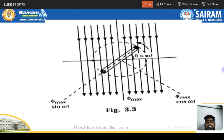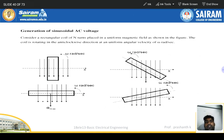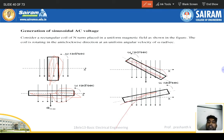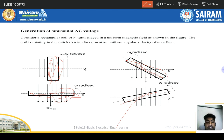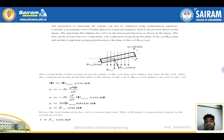This is a pictorial representation of how generation occurs. The magnetic flux lines are shown and conductors are present. As the conductor rotates and cuts the magnetic field, EMF is induced. When the armature conductor is parallel to the field, the induced EMF is zero (sin 0° = 0). When perpendicular to the field, the induced EMF is maximum.